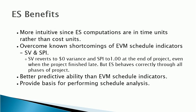The cost-based schedule indicators — Schedule Variance (SV) and Schedule Performance Index (SPI) — have known issues. SV reverts to $0 variance and SPI reverts to 1 at the end of a project, even for a late-finish project. But ES behaves correctly through all phases of early and late-finish projects, so it has better predictive ability.